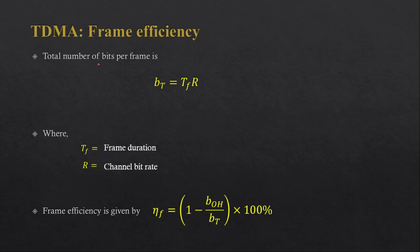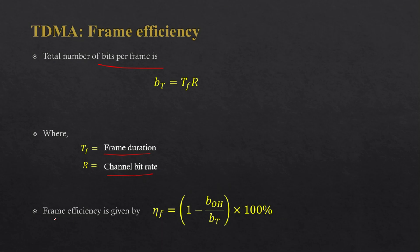The total number of bits per frame is given by B_T = T_f × r, where T_f is the frame duration and r is the channel bit rate. The TDMA frame efficiency is then: η_f = (1 − B_oh / B_T) × 100%, expressed as a percentage. This gives the proportion of the frame used for actual data versus overhead.